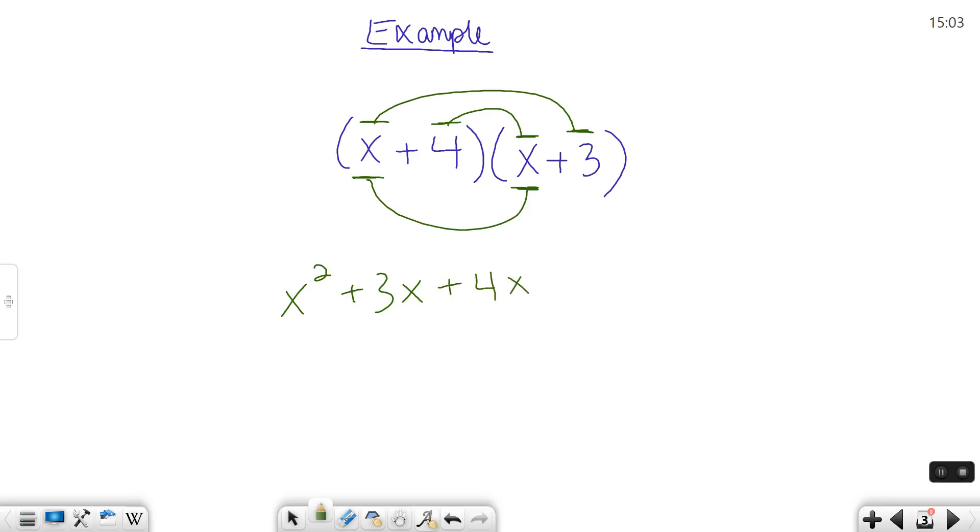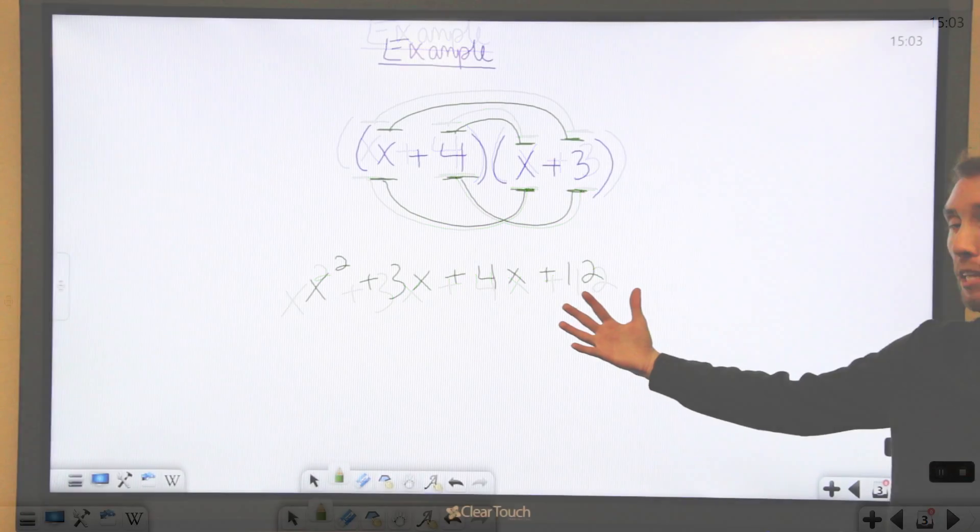And then move to L, the last terms, which are 4 and 3. 4 times 3 is 12. And it's a positive 12. So now that you have this,